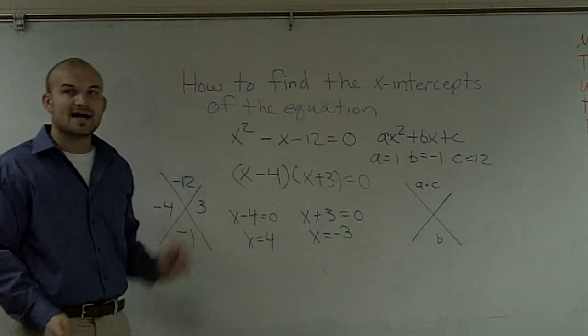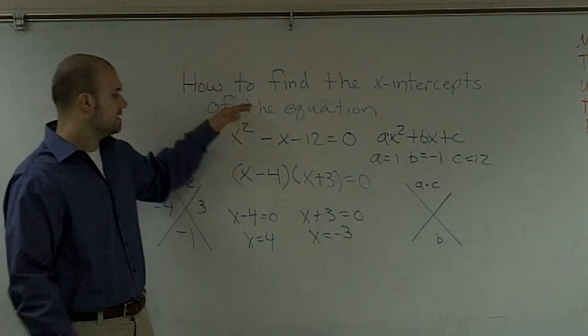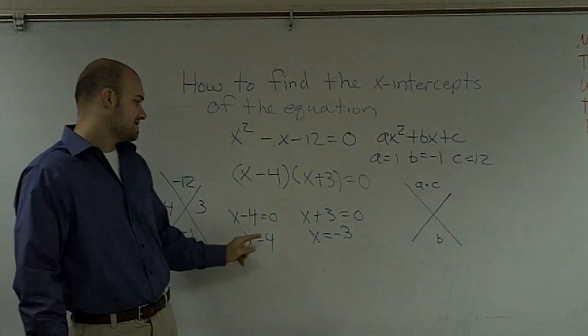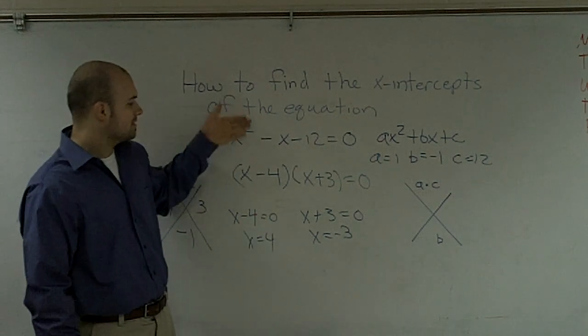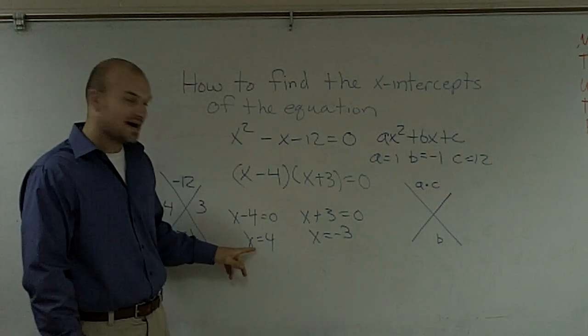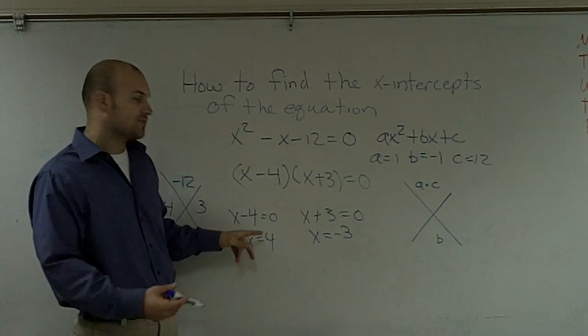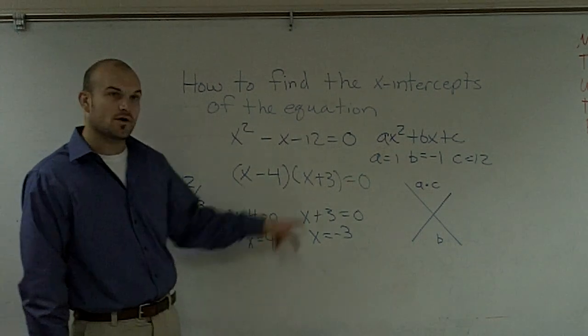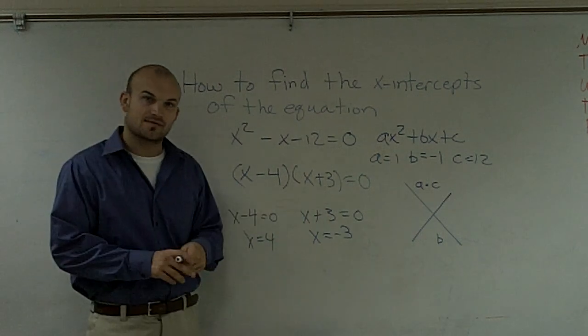So therefore, to find the x-intercepts of the equation by factoring it, I find out that the graph crosses the x-axis at x equals 4 and x equals negative 3.